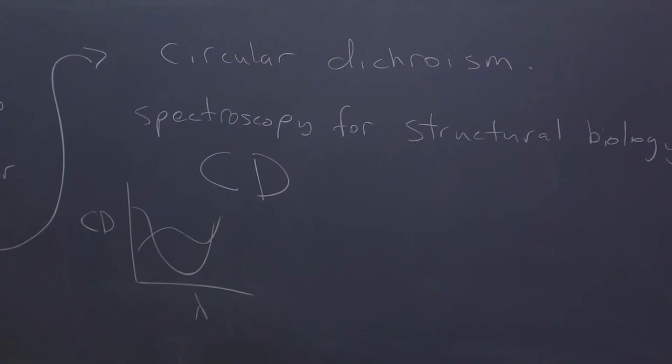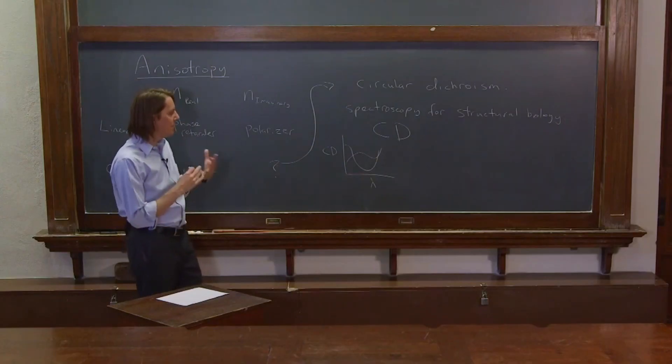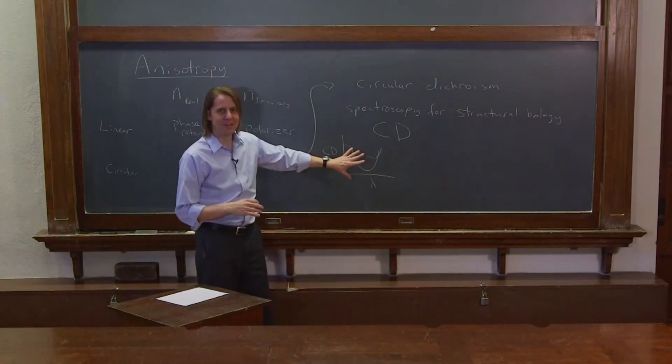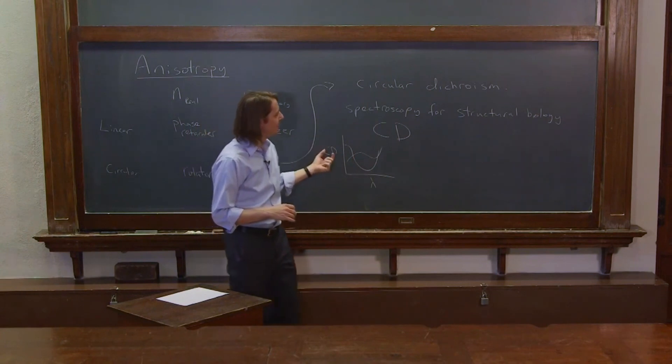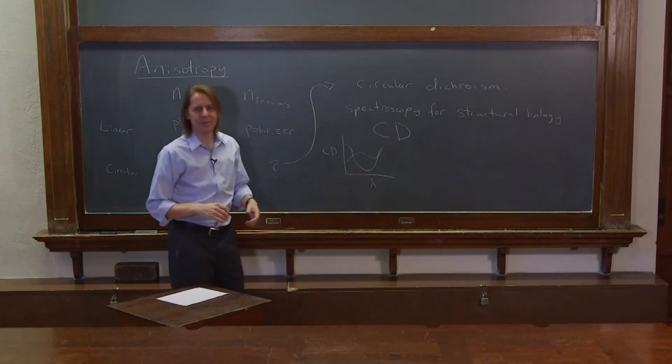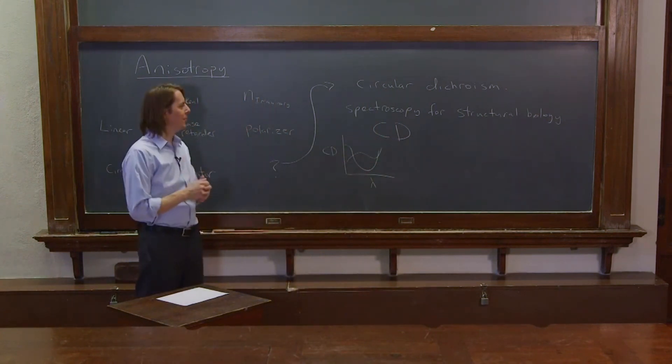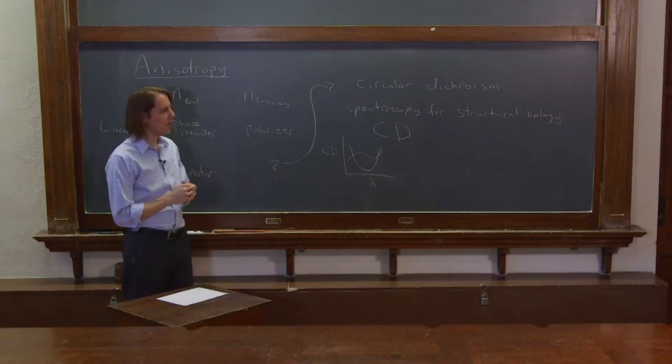But it's really the circular dichroism is a function of wavelength. So it's sort of a very complicated thing. It's really done sort of phenomenologically. And the effect is extremely small, so the CD is very expensive. But let's all go find out if all the biologists know what the CD is. All right. So there we go.